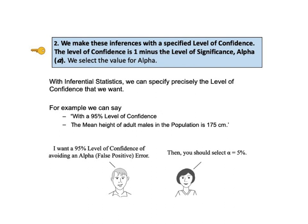We want to be confident that our conclusion is not a false positive. A false positive in this case would be to conclude that the mean height is 175 centimeters plus or minus 5 centimeters, when in fact the true population mean was outside that range. A false positive is called an alpha error or a type 1 error. Alpha is the maximum probability of an alpha error which we are willing to tolerate — we get to select the value of alpha. Alpha equals 1 minus the level of confidence. If we want a 95% level of confidence, we select alpha equals 5%, entered as 0.05 in most spreadsheets or software.